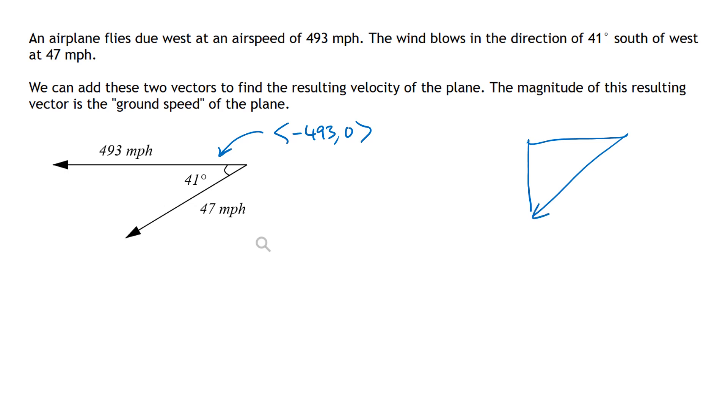So there's my vector. The hypotenuse of this triangle is 47 because that's the length of that vector, and this angle is 41 degrees. Now what I want to know are the x and y components of this vector. So I'm going to label my triangle so that the horizontal side of the triangle is x and the vertical side of the triangle is y.